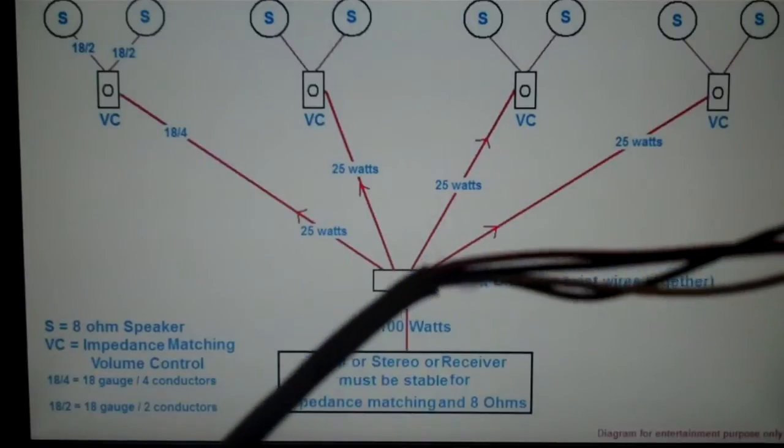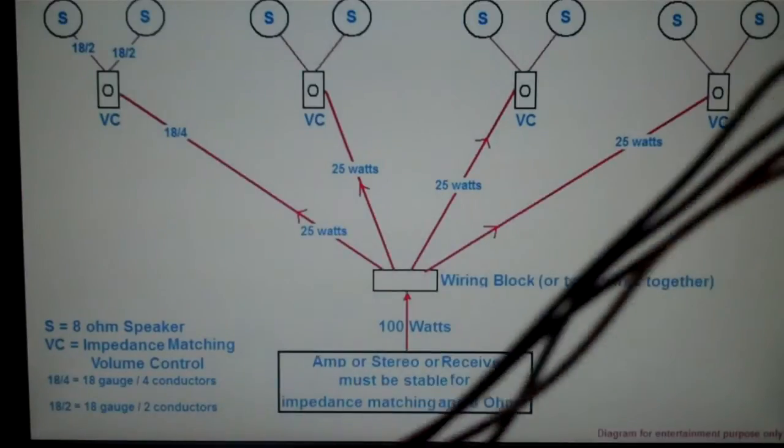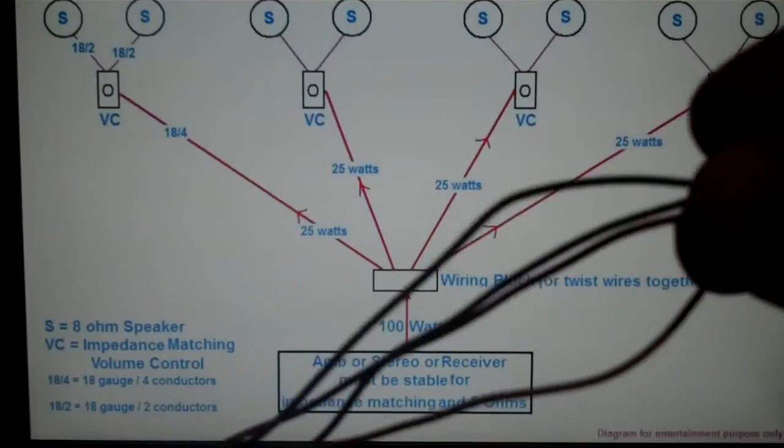Now, in this diagram, we're looking at about a 2,000-square-foot house. But again, this right here is an 18-gauge four-conductor wire.